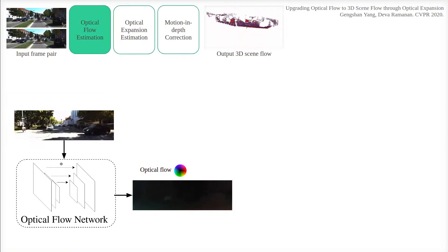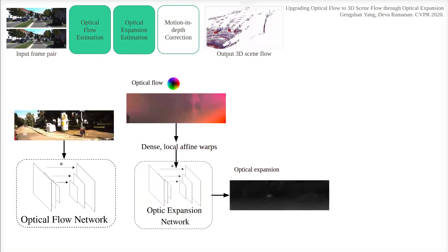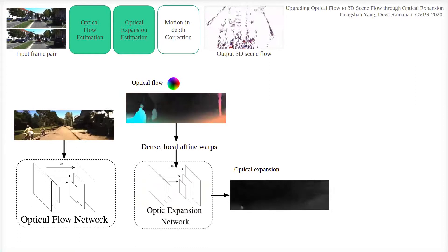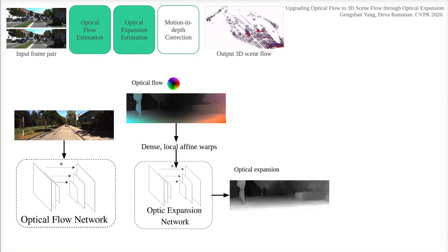Then, we analytically compute an initial estimate of optical expansion by fitting dense local affine warps in the optical flow maps using a convolutional layer. We visualize the scale component of the affine transform in grayscale.